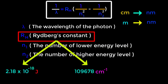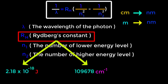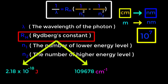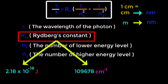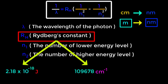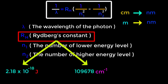Now, how do we convert units to nanometer? To convert centimeter to nanometer, multiply by 10 to the power 7, because 1 centimeter equals 10 to the power 7 nanometers. To convert meter to nanometer, multiply by 10 to the power 9, because 1 meter equals 10 to the power 9 nanometers.